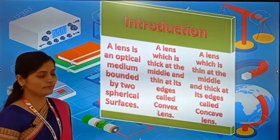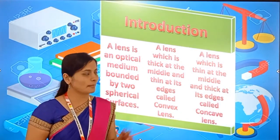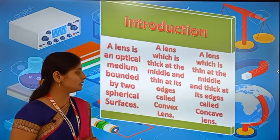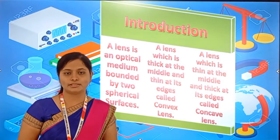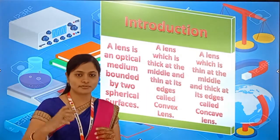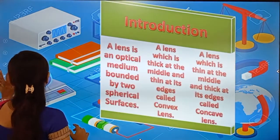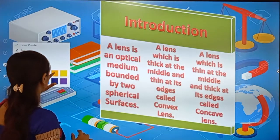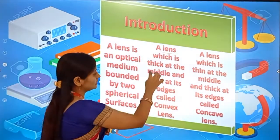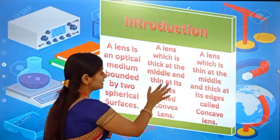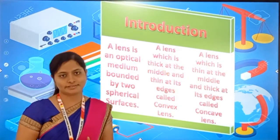Next, the definition of the convex lens and the concave lens. A lens which is thick at the middle and thin at its edges is known as a convex lens.